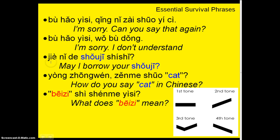Next: may I borrow your shǒujī? A shǒujī is just a cell phone. To say 'may I borrow your phone?' you say: jiè nǐ de shǒujī shì shi. Jiè nǐ de shǒujī shì shi — may I borrow your cell phone?